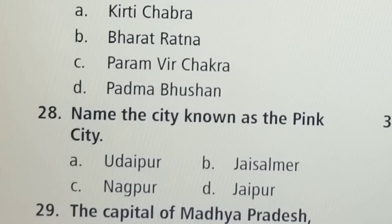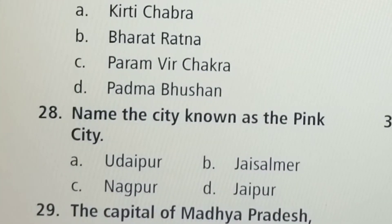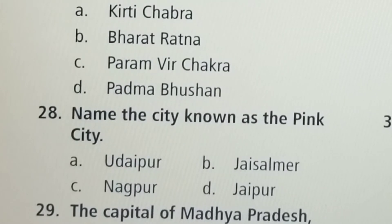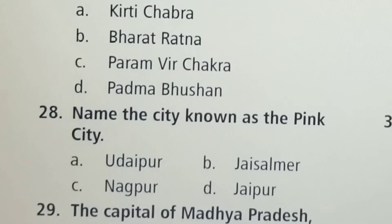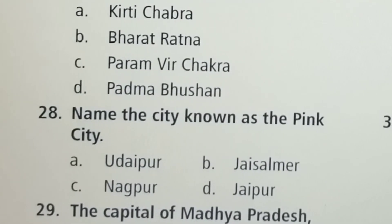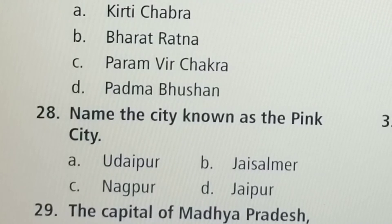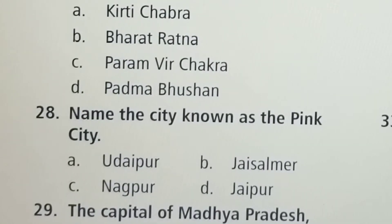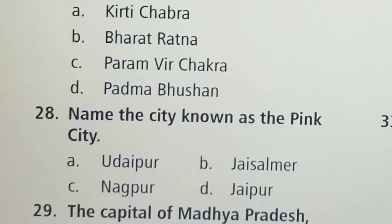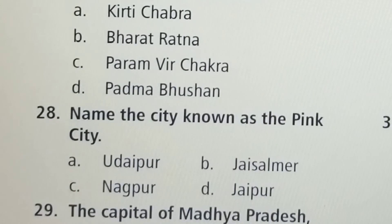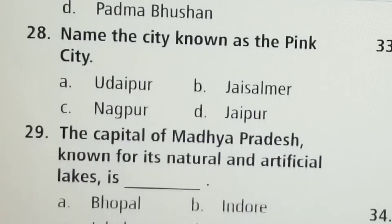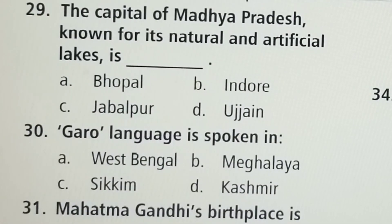Next question: Which city is known as the Pink City? Option A: Udaipur, Option B: Jaisalmer, Option C: Nagpur, Option D: Jaipur. Option D, Jaipur, is the correct answer.